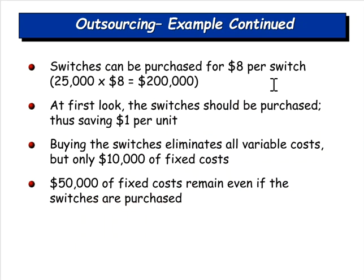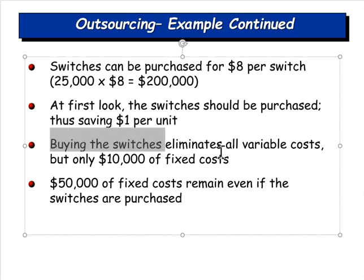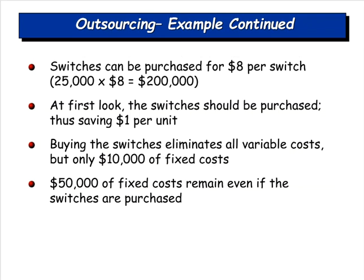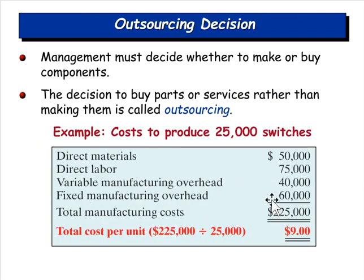If the switches can be purchased from someone else for $8 per switch, it looks like a $1-per-unit saving — $25,000 total. But here's the catch: buying eliminates all variable costs but only $10,000 of the fixed costs. You still have $50,000 in fixed costs that don't go away if you decide to purchase switches externally.